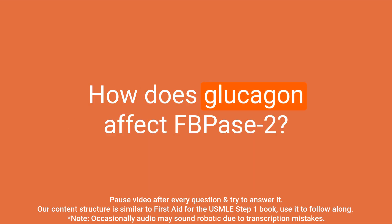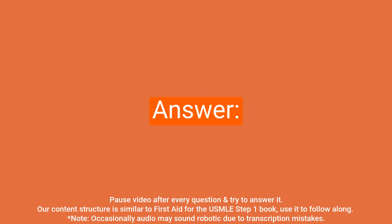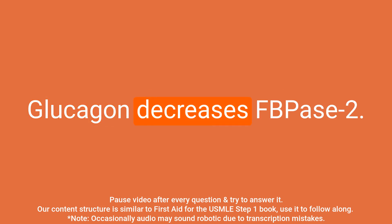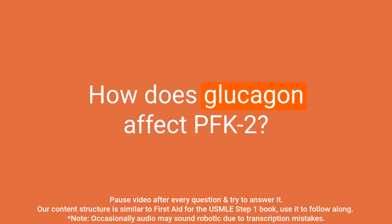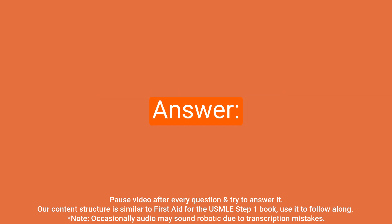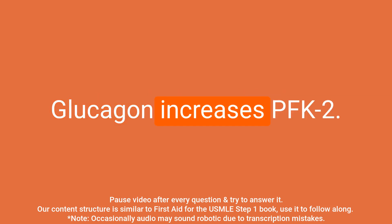Question: How does glucagon affect FB-PACE-2? Answer: Glucagon decreases FB-PACE-2. Question: How does glucagon affect PFK-2? Answer: Glucagon increases PFK-2.